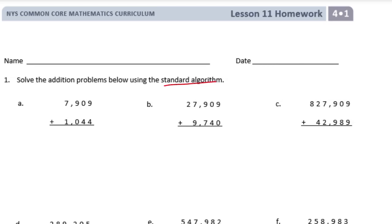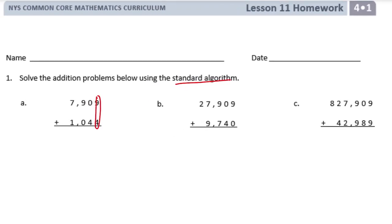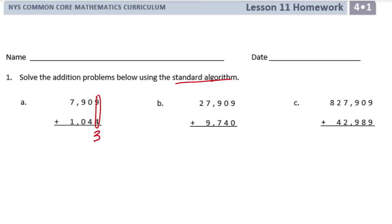Starting with 7,909 plus 1,044, we add in place value order from right to left. 9 plus 4 is 13: put the 3 down and carry the 1 to the next place. Then 1 plus 0 plus 4 is 5, 9 plus 0 is 9, and 7 plus 1 is 8. We get 8,953.